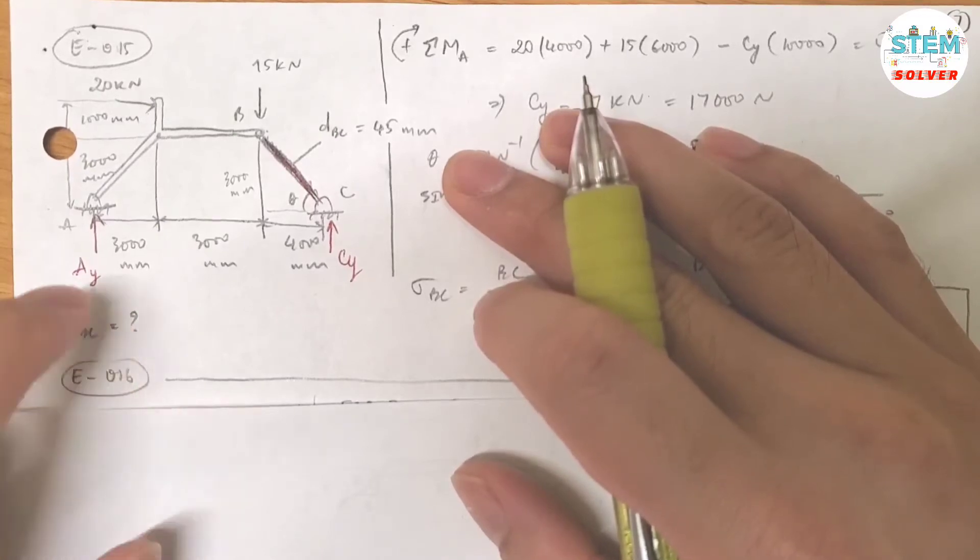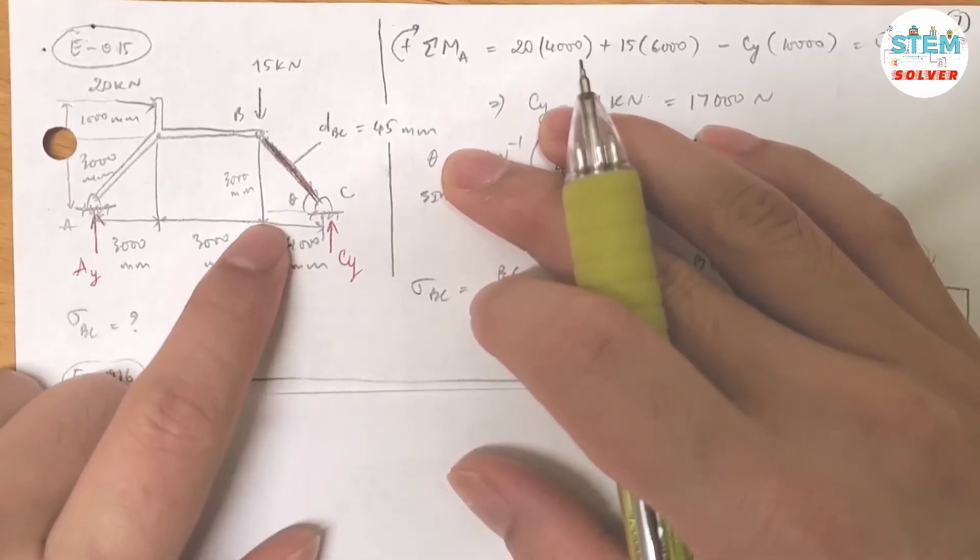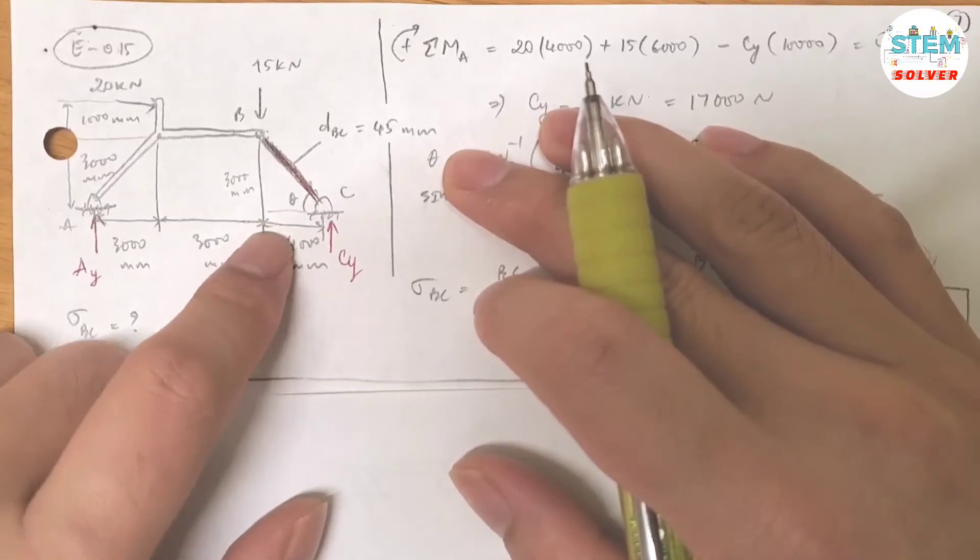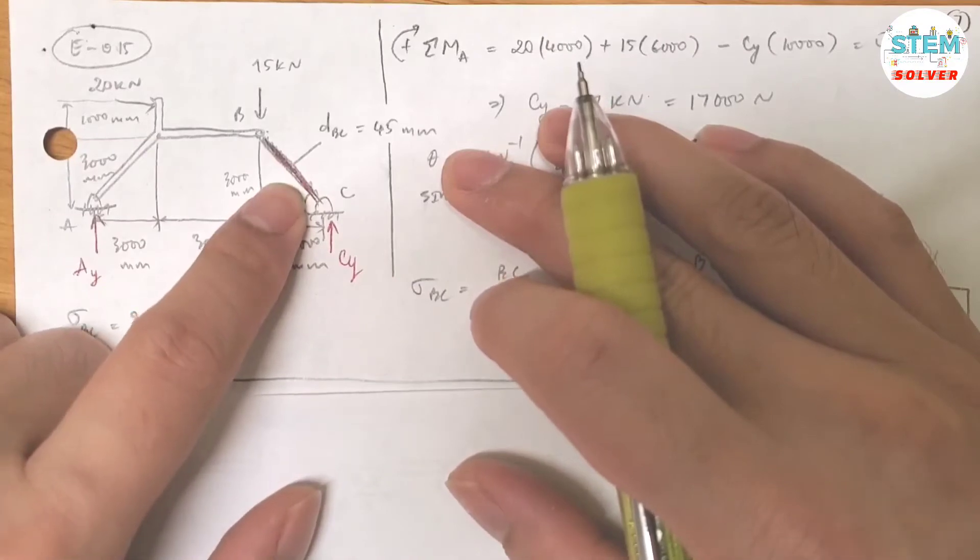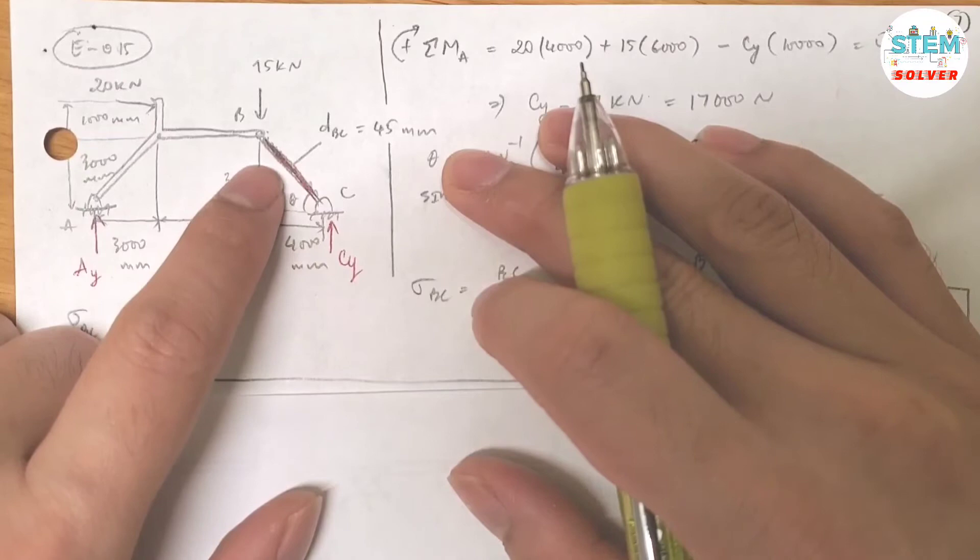So let's see, can you use summation about x and y to find the unknown? The question asks you to find the normal stress in this member BC, so what you need to know is the normal force.